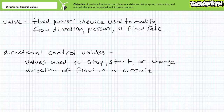A valve is a fluid power device designed to modify pressure, flow rate, or flow direction. A subset of these valves — those that modify flow direction — are appropriately called directional control valves. Directional control valves are designed to stop, start, and change direction of flow in a fluid power circuit. Which position a directional control valve assumes ultimately influences the actuation direction of a fluid power actuator.